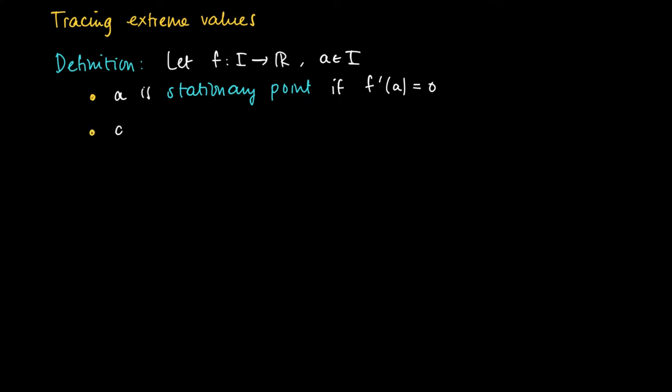And a is a critical point if it is stationary, so that means that the derivative in a equals 0, or that the derivative in a does not exist.